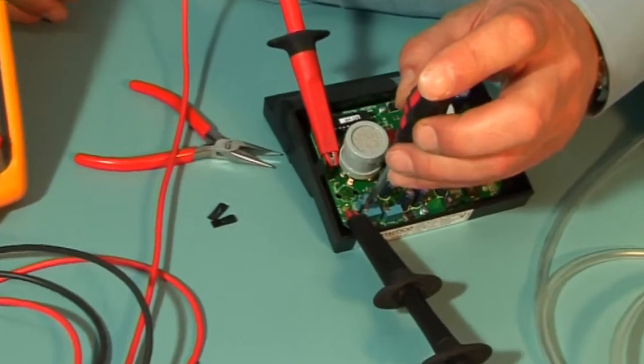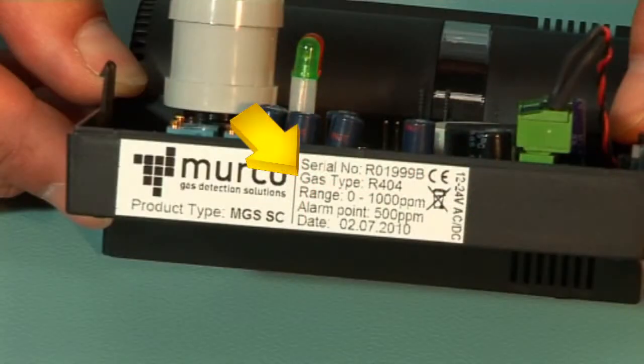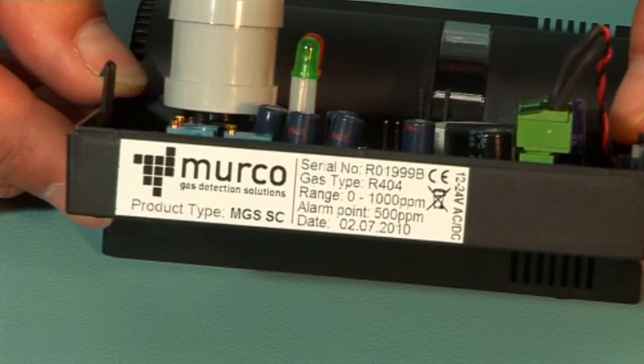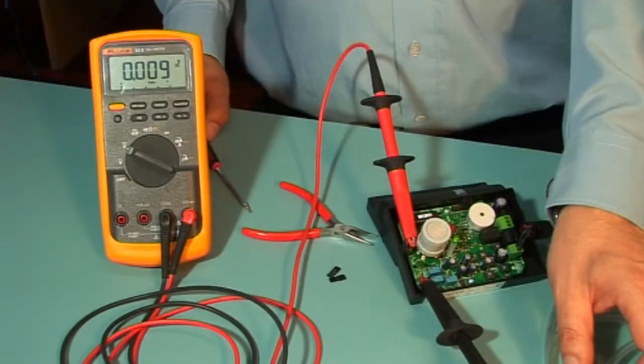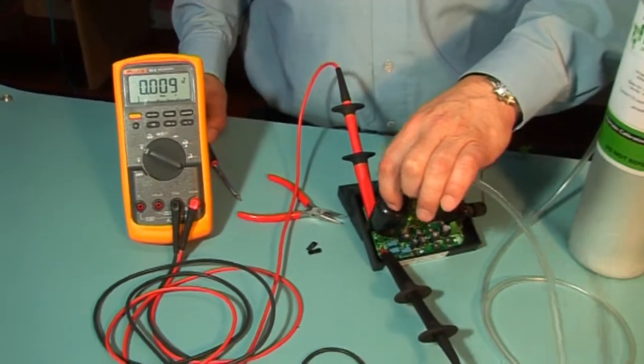For a quantified test, you need to use a calibration cylinder for the target gas at a concentration as on the rating label or higher. Expose the sensor by introducing gas to the sensor here.